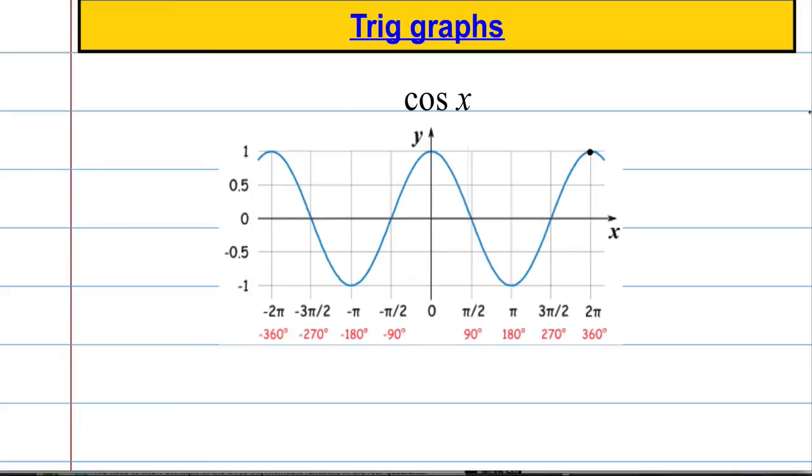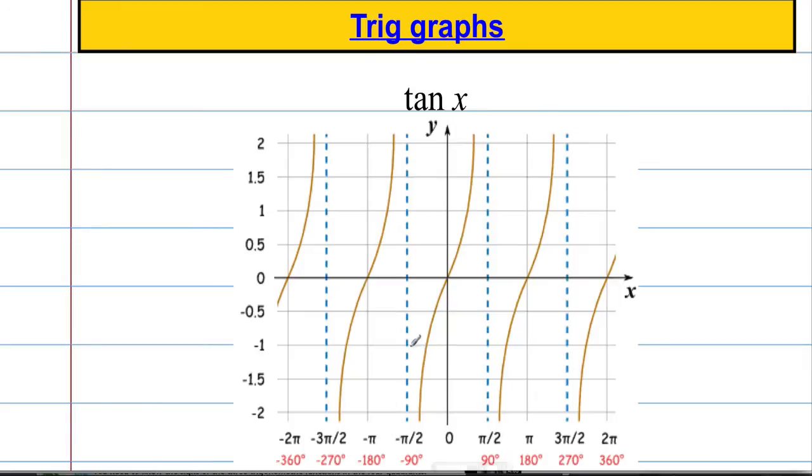And tan of x looks a little bit strange. So it is periodic. But you'll notice that we've got asymptotes at minus 90 and 90 and 270. So at 90 and then every 180 degrees after that we have an asymptote. So it's undefined. It shoots off up to infinity in this direction and down to negative infinity in that direction. So we do need to be aware of that. Let's see how we might be able to use these to answer some questions.